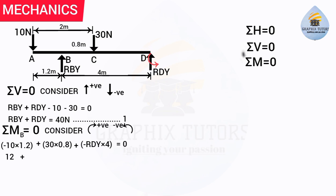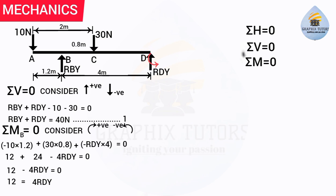Calculating: −10 × 1.2 = −12; +30 × 0.8 = +24; so −12 + 24 − 4·RDy = 0, giving 12 = 4·RDy, therefore RDy = 12 ÷ 4 = 3 N. To convert to kilograms, divide by gravity (9.81): 3 ÷ 9.81 ≈ 0.31 kg.